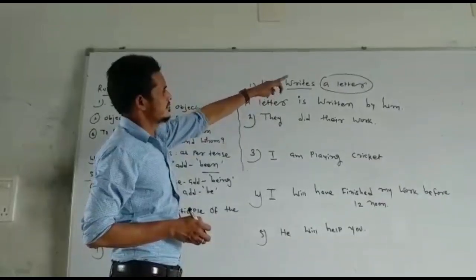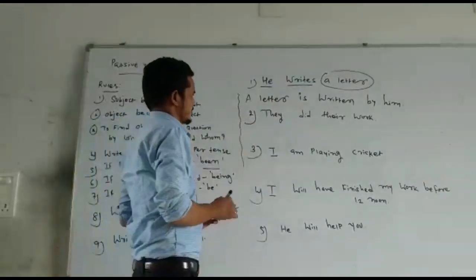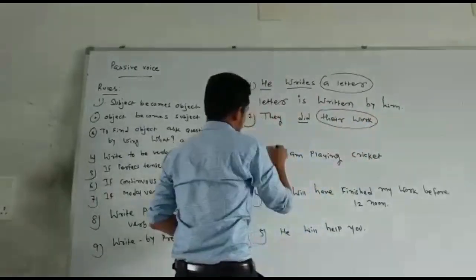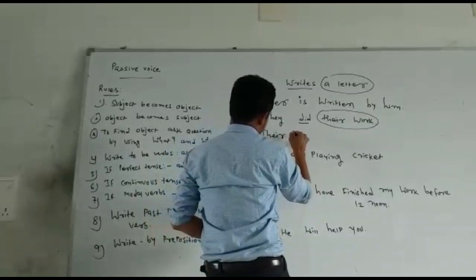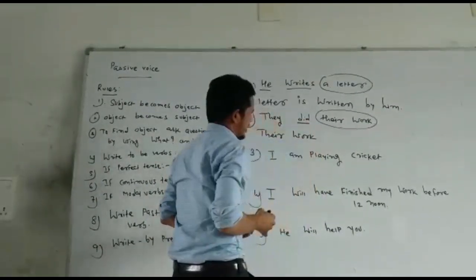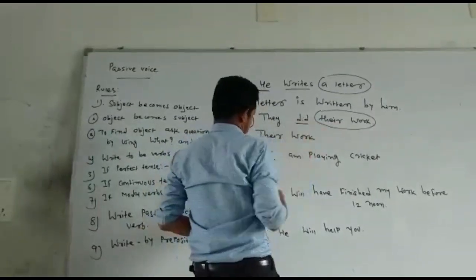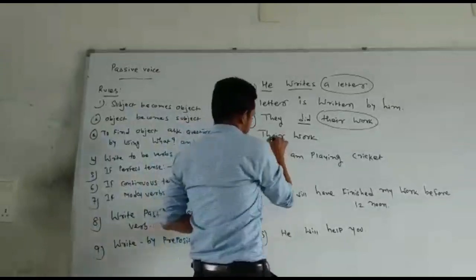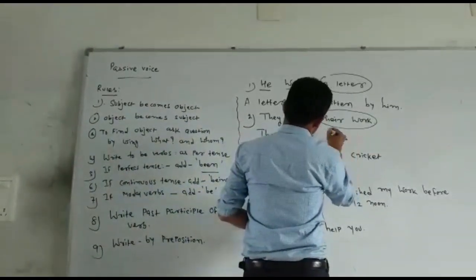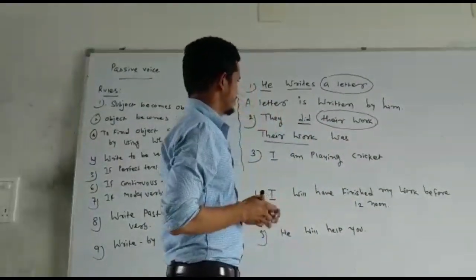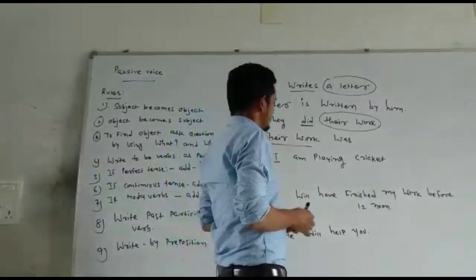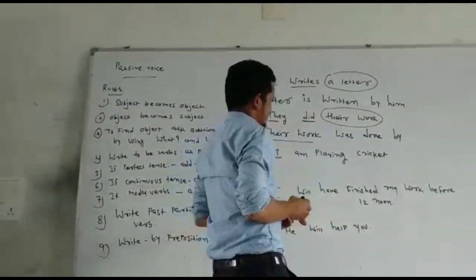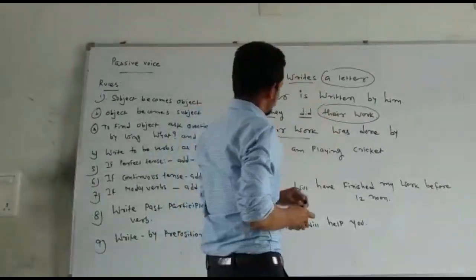'A letter is written by him' is the passive sentence; 'He writes a letter' is the active sentence. Next example: 'They did their work.' What did they do? Their work — that's our object. Tense is simple past, so the be-verbs are 'was' and 'were.' The object 'their work' is singular, so we write 'was.' Third form of 'do' is 'done.' Then 'by' preposition. 'They' is a subjective pronoun, so it becomes 'them.'